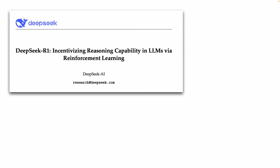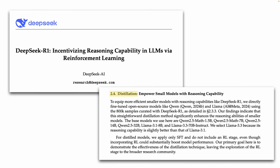DeepSeek R1 — I'm intentionally saving it for last, even though it came out before Gemma 3 and Llama 4. On paper, DeepSeek uses knowledge distillation to compress their large R1 model, which is a mixture of experts, into smaller dense models. But personally, I think calling it distillation is a stretch. To explain why, we need to go back.